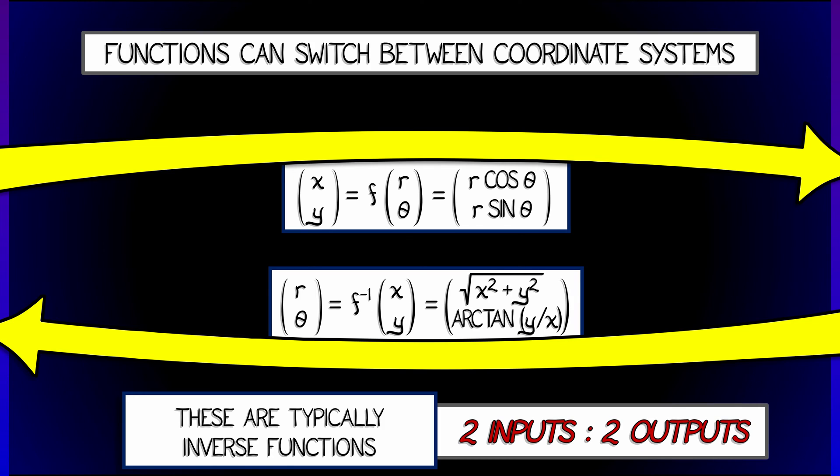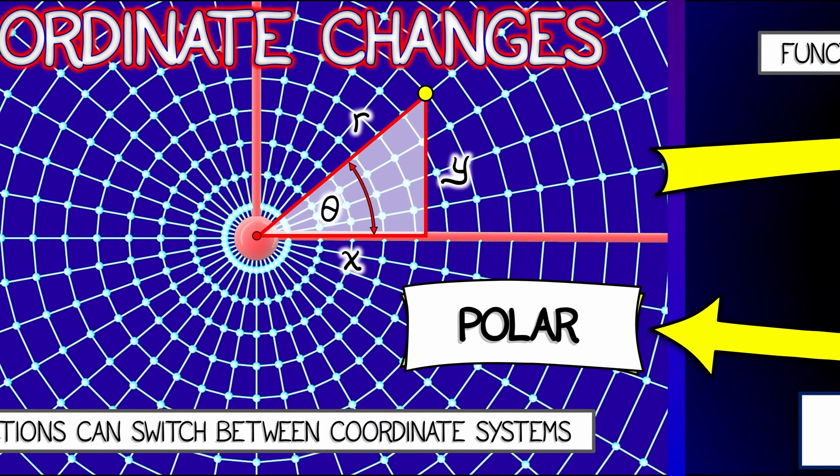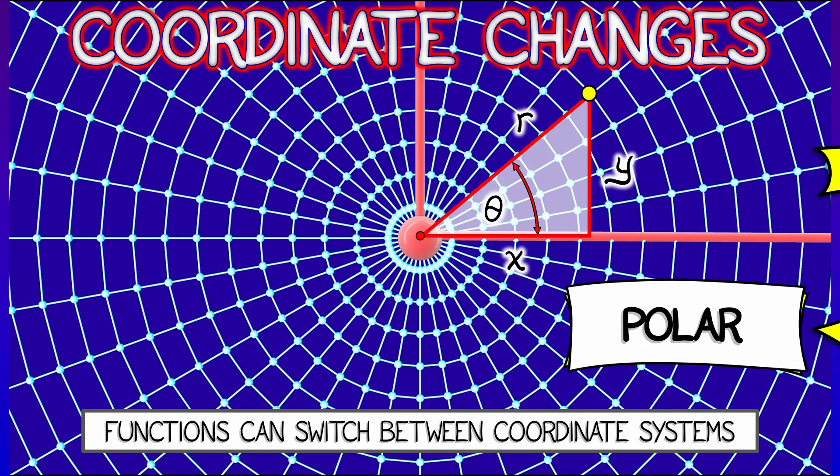If you want to go the other way, you take the inverse of that function. These functions have multiple inputs, multiple outputs, and we can visualize them in terms of the coordinate systems.